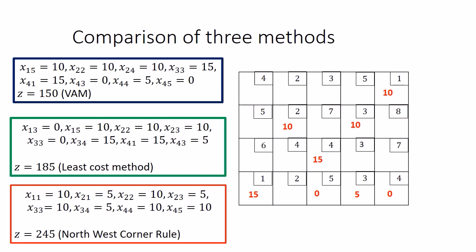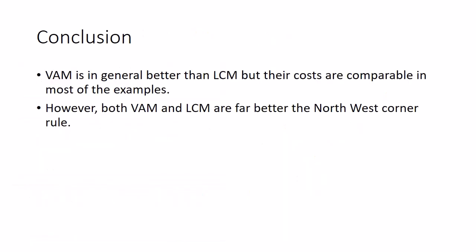Comparing with existing techniques: with the Least Cost Method we were getting 185, with the Northwest Corner Rule we were getting 245, and with VAM we are getting 150. For this example, VAM gives the best initial basic feasible solution. In general, Vogel's Approximation Method is better than the existing techniques. VAM and the Least Cost Method give comparable answers in some cases, but both are far better than the Northwest Corner Rule.